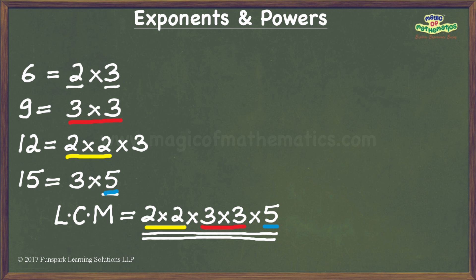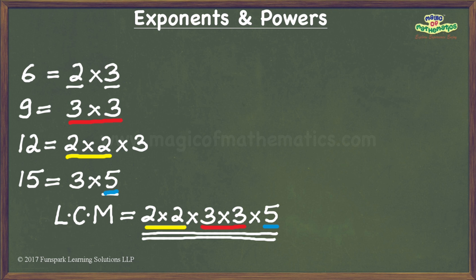I will begin with the least non-trivial multiple of the LCM, namely twice the LCM. Its prime factorization can be obtained by multiplying the prime factorization of the LCM by 2. As we can see, now in addition to the 5, there is a 2 which is not paired up, so we still don't have a perfect square. The next multiple, namely 3 times the LCM, has an unpaired 3 in addition to the unpaired 5, so this will also not work.